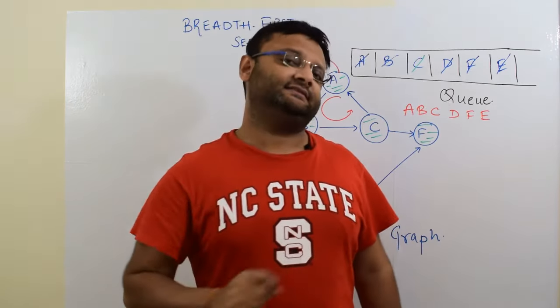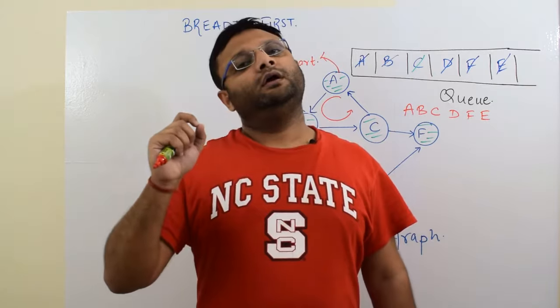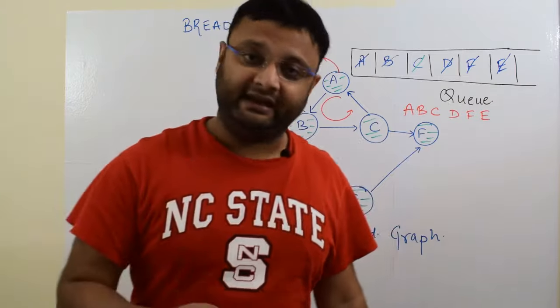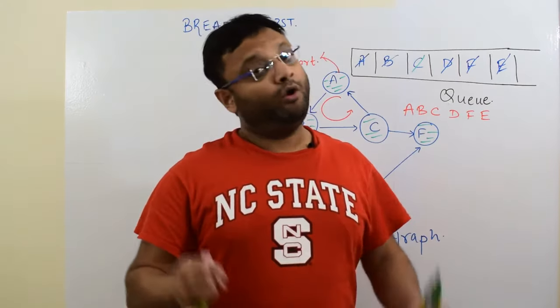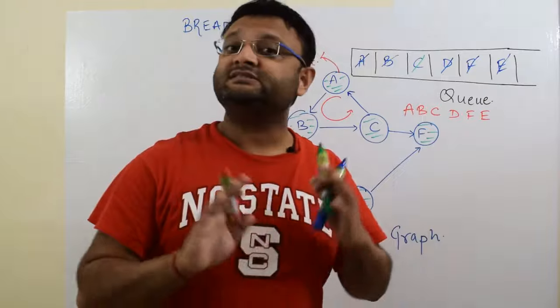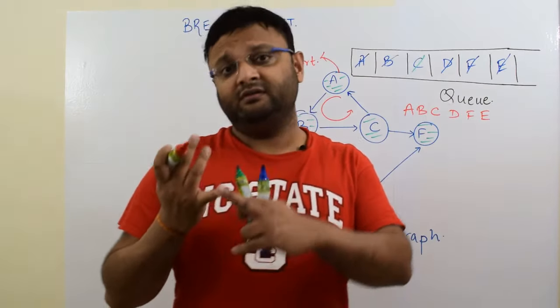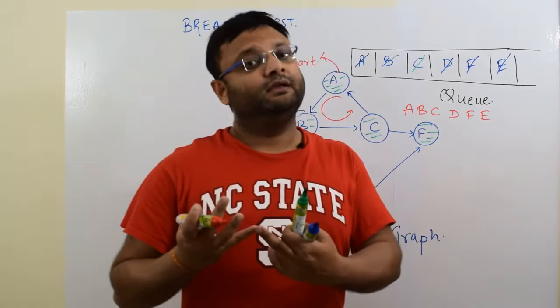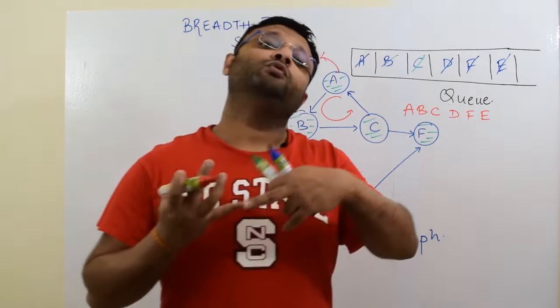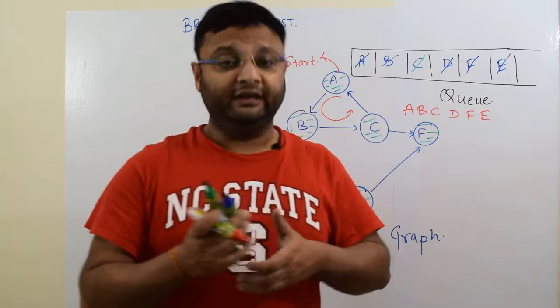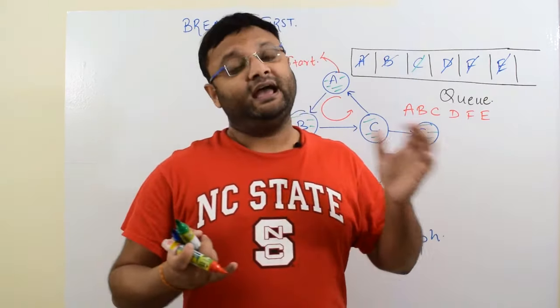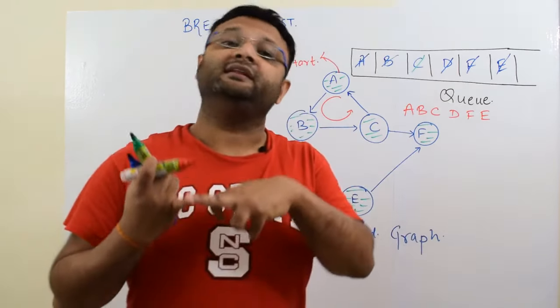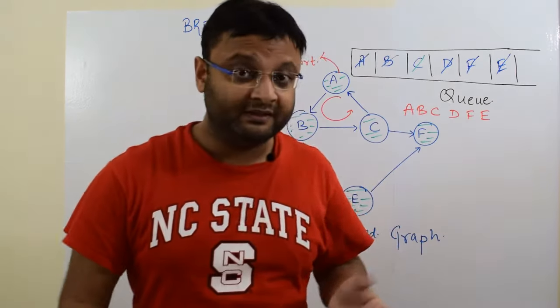And if yes, will there be some different approach when we are dealing with directed and undirected graph? Or will the approach stay the same? First of all, can we use BFS to detect loop in any graph? If yes, whether that graph needs to be directed or undirected? And if you can detect in both of them, will the approach differ or be the same? This is a very good question, usually asked in interviews.